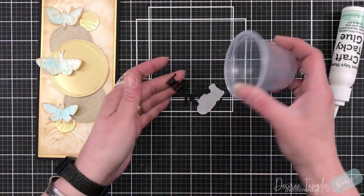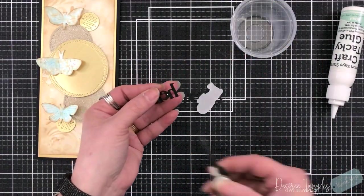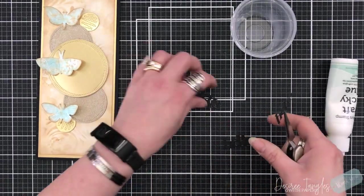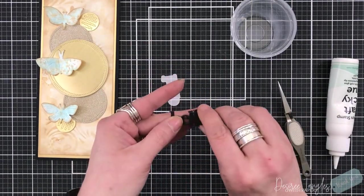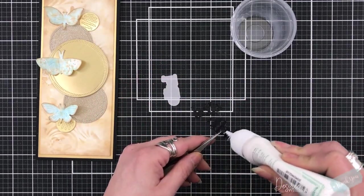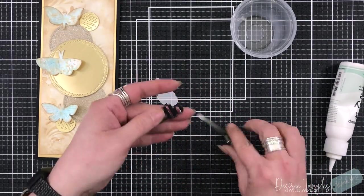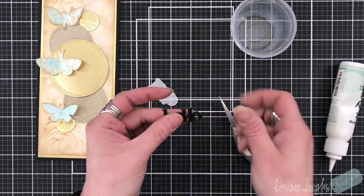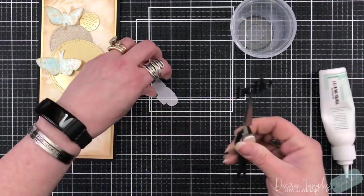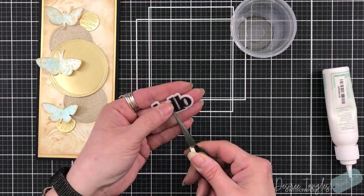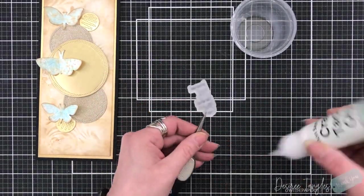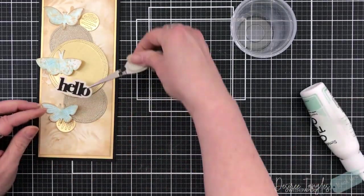The sentiment I'm using is their hello chunky die cut sentiment. I just love the font of it, and it also not only comes with the sentiment but it comes with the cloud - okay, I call it the cloud - the background. I die cut the hello from black cardstock three times, layering that up and setting that onto a piece of vellum. I'm going to set that right at the base of the large gold circle there, putting the glue behind the sentiment itself so it can be hidden in behind.